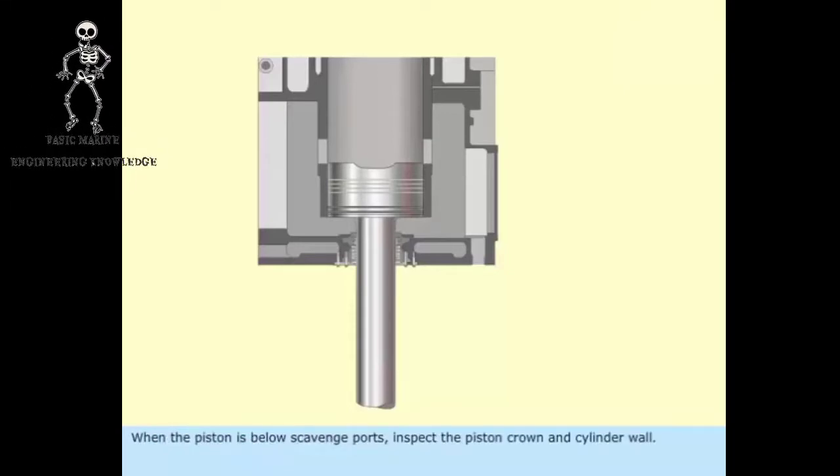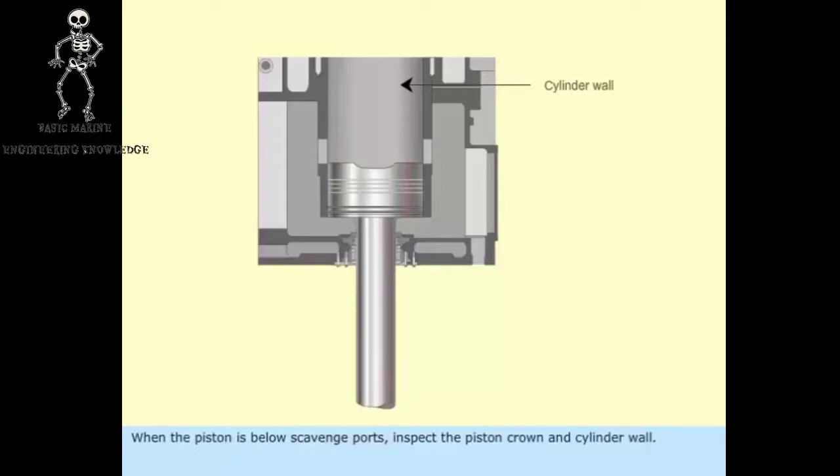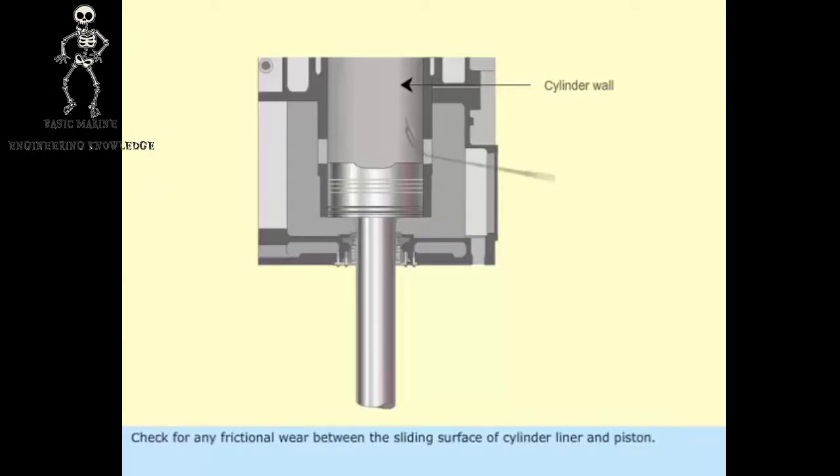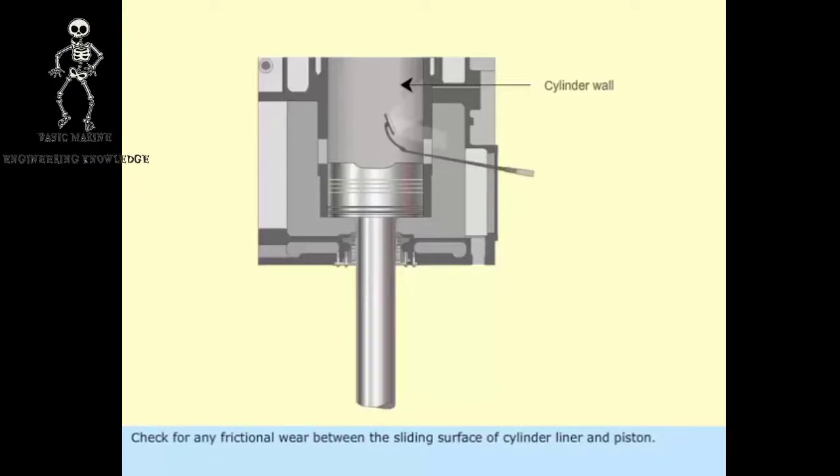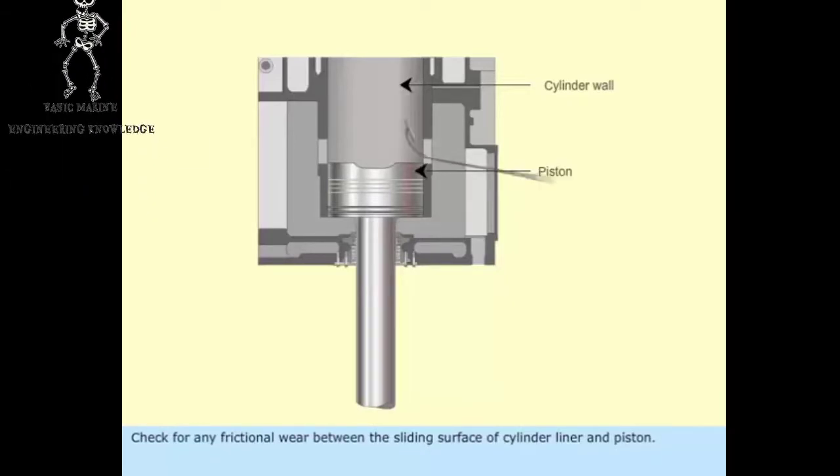When the piston is below scavenge ports, inspect the piston crown and cylinder walls. Check for any frictional wear between the sliding surface of cylinder liner and piston.